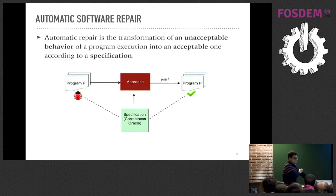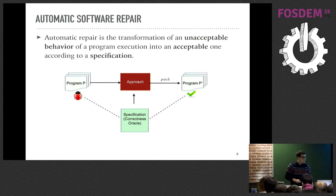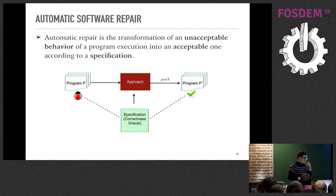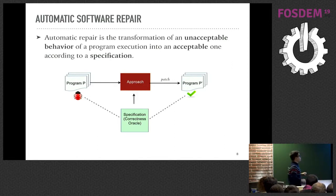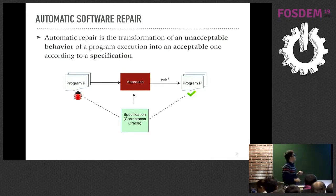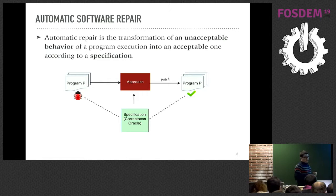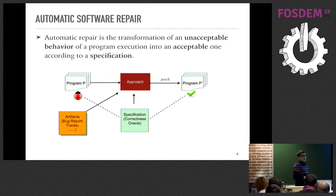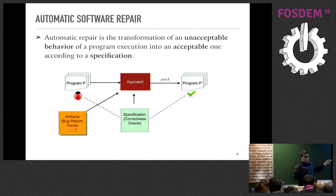What is automatic software repair? Imagine we have a program P that has a bug. The idea is to take an approach that takes a specification of the program — we can call it a correctness oracle — and creates a version P' whose behavior is acceptable with respect to the specification. Additionally, the approach can consume, in addition to source code and specification, some artifacts such as bug reports, traces, etc.